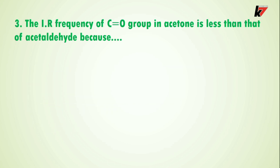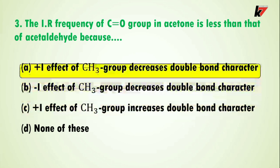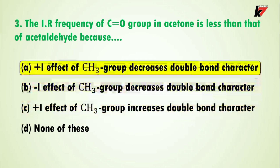Question 3: the IR frequency of the carbonyl group in acetone is less than that of acetaldehyde. The correct answer is option A: the plus I effect of the CH3 group decreases double bond character. In the structure of acetone, there are two methyl groups. The CH3 group is an electron-donating group — it gives rise to the plus I effect, which decreases double bond character, resulting in a lower IR frequency for the carbonyl group in acetone than in acetaldehyde.